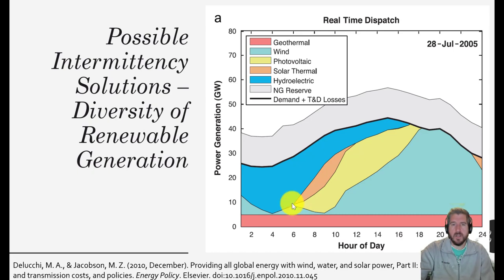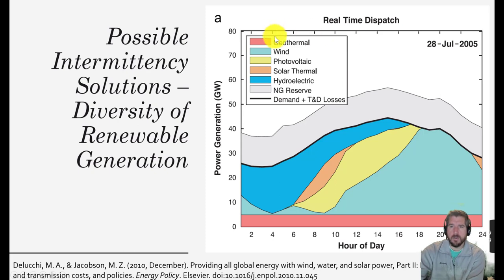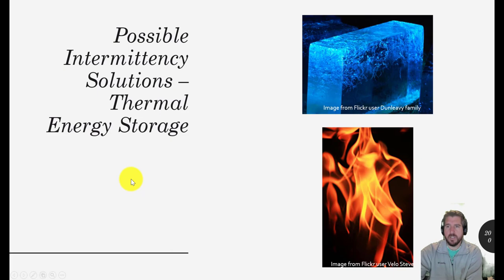We can also do this by using multiple different renewable generation resources. We've focused on wind and solar because that's what really exists on the eastern seaboard, but California also has geothermal, solar thermal, and a lot of hydroelectric. You can see how all of these can add up in different combinations to provide balancing on the grid.